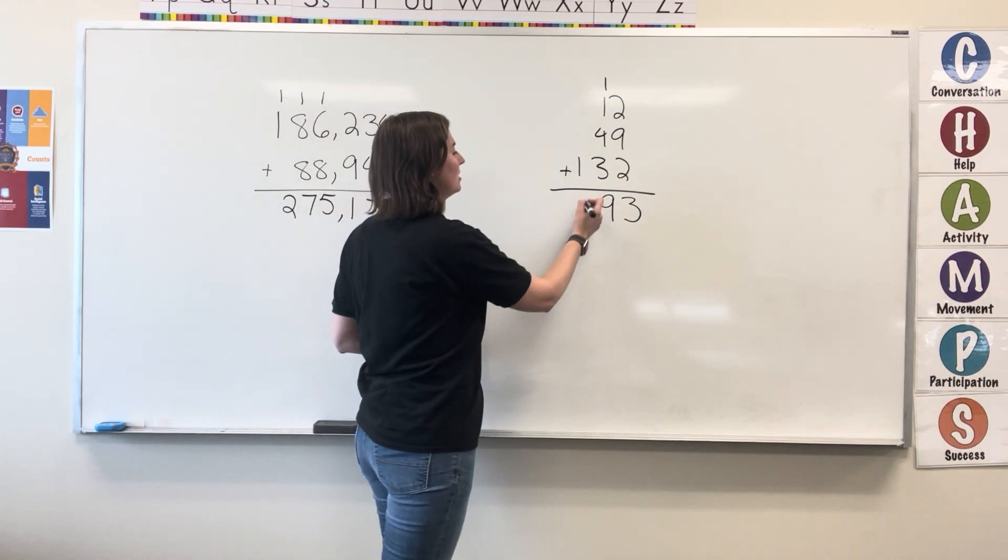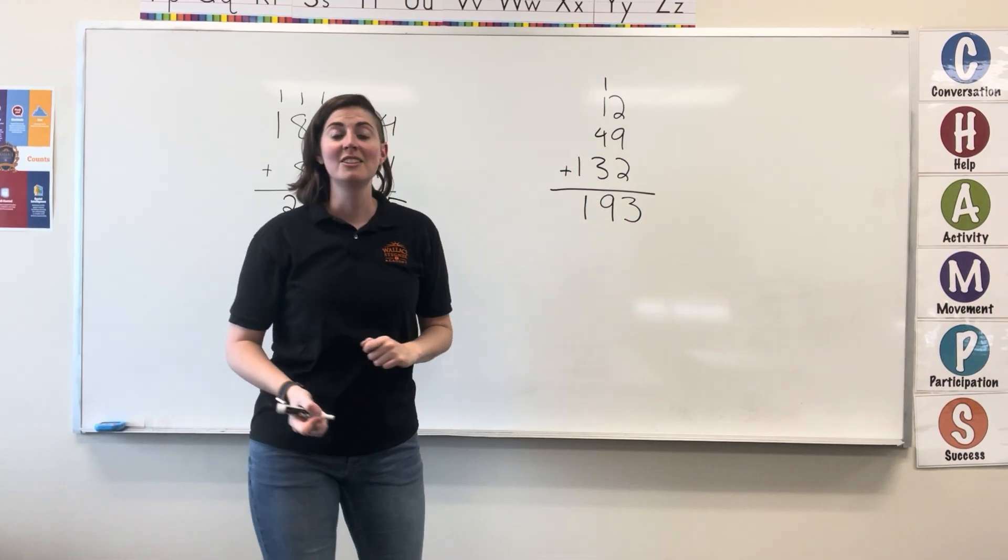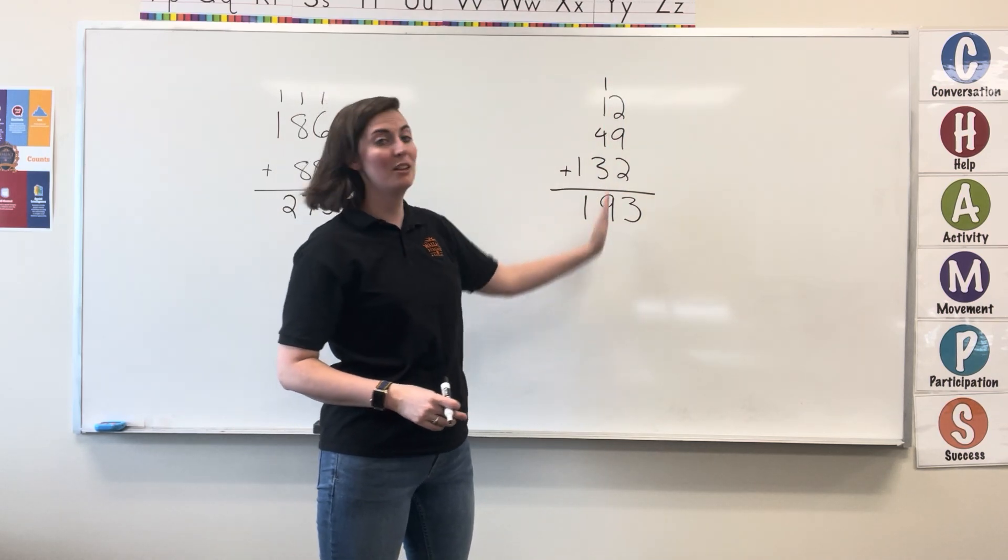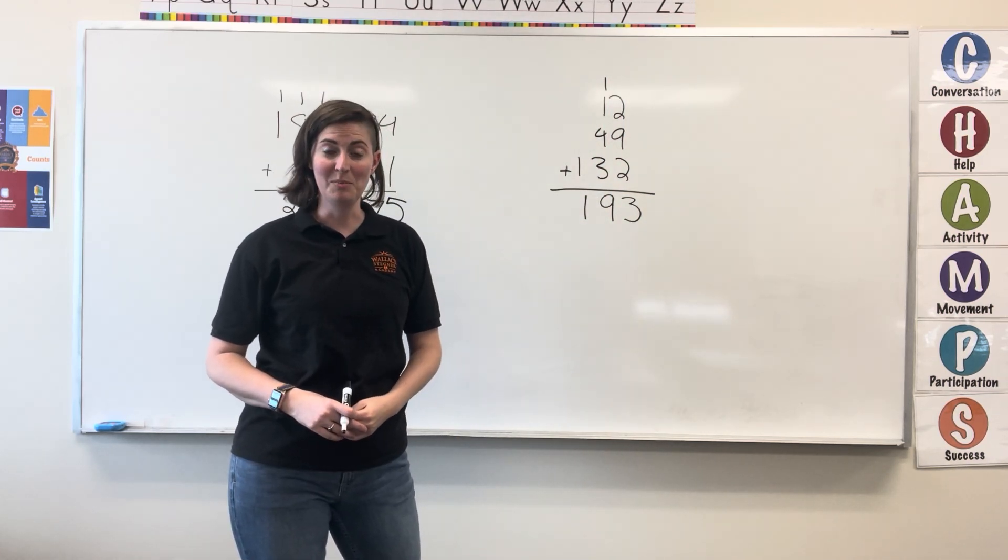And then, we just have 1 added to nothing, so 193. Always just adding, column by column, starting in the 1's place value.